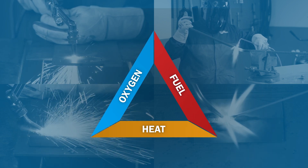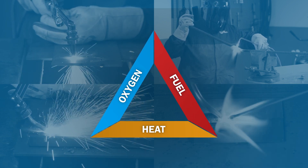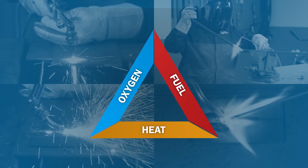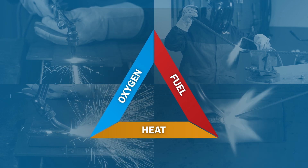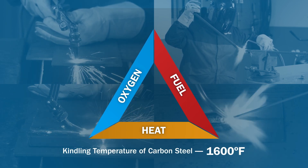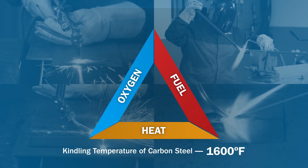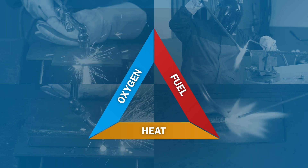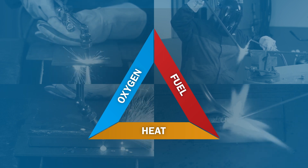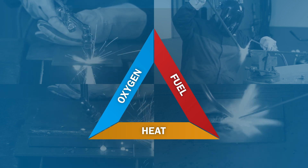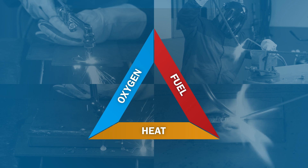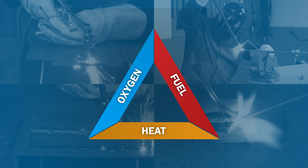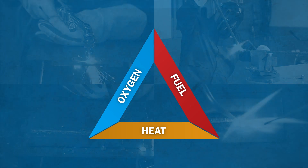Fuel is used to create a preheat flame that raises the temperature of the metal. The metal needs to reach its kindling temperature, which for carbon steel is 1600 degrees Fahrenheit. Once the kindling temperature is reached, the high purity oxygen is added to create the combustion chemical reaction, which oxidizes the material.